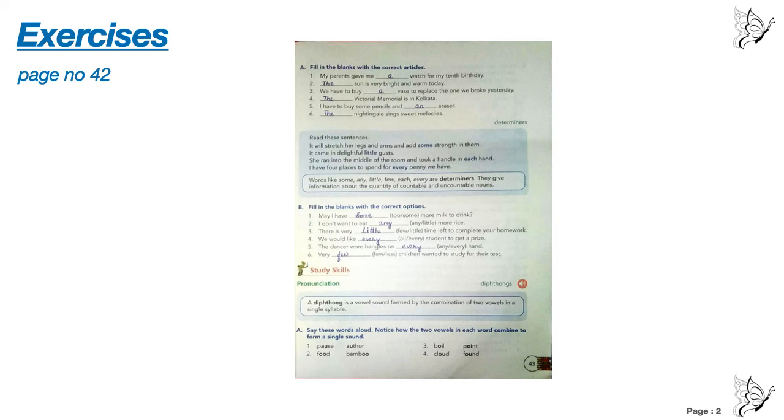Number one, may I have, in the bracket it is given two and some. The answer will be some. May I have some more milk to drink. Number two, I don't want to eat, in the bracket any and little. I don't want to eat any more rice. The answer is any. Number three, there is very little time left to complete your homework.